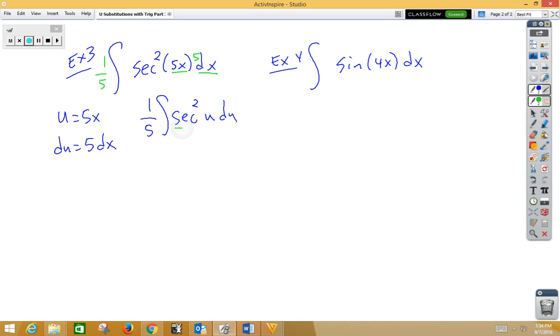We recognize secant squared as being the answer for the derivative tangent. So we would have 1 fifth tangent. It's not u. u is, again, 5x plus c.